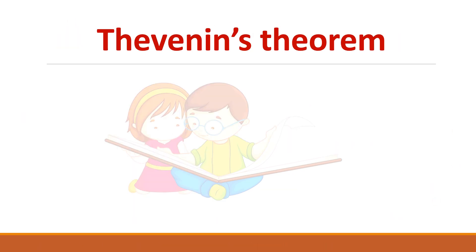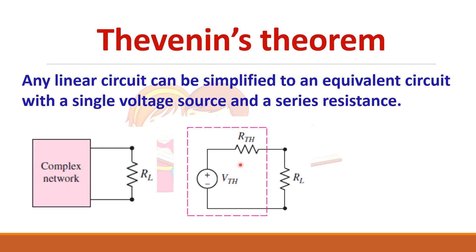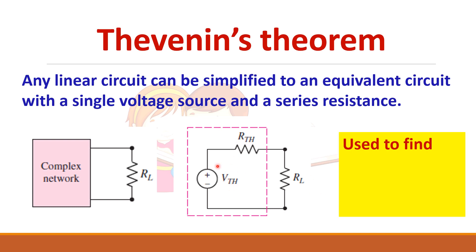Thevenin's theorem states that any linear circuit can be simplified into one equivalent circuit with a single voltage source and a series resistance. Vth is the Thevenin voltage and Rth is the Thevenin resistance. This theorem can be used to find the current through the load, or the voltage across the load, or the power delivered to the load.